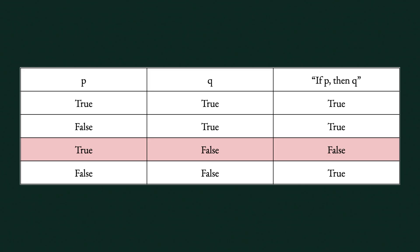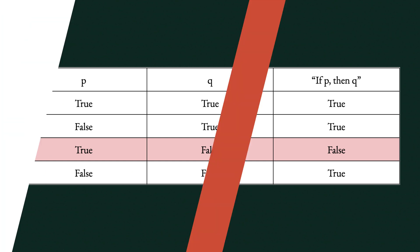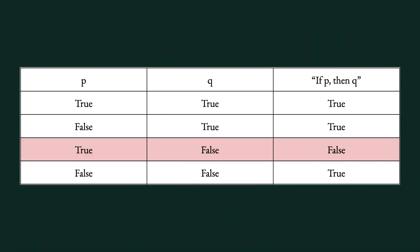As this table shows, the only situation when the hypothetical proposition 'if p then q' is false is when p is true and q is false. Strangely enough, this means that whenever p is false, 'if p then q' is true no matter what q is.